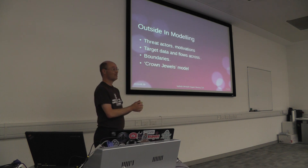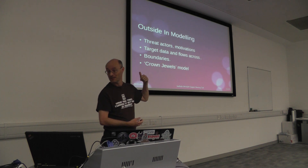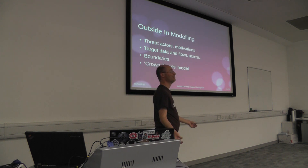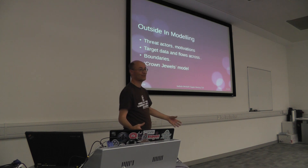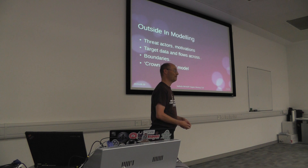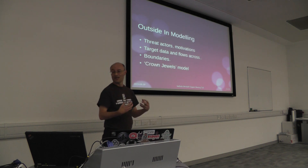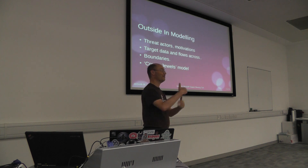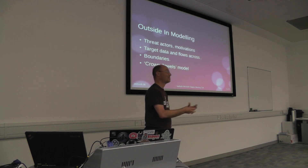You start with the data — the targets of interest to your attacker. Then you classify your attackers: these are threat actors, generally identified by your external intelligence. You ask: who's actually interested in what we've got, and why? That needs being part of the security community, knowing what's of interest at the moment. Card data is always of interest; personally identifiable information changes a bit. Threat actors tend to come in standard categories: script kiddies up to foreign intelligence services, with organised crime, journalists, and hacktivists in the middle.